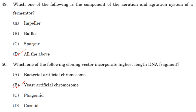Which cloning vector incorporates the highest length DNA fragment? It is the yeast artificial chromosome (YAC). You can clone DNA fragments larger than 100 kb and up to 3000 kb using YACs.